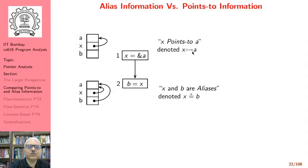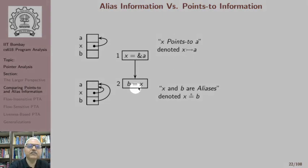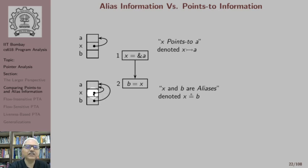After the execution of the next assignment, we store the contents of x into b. The contents of x happen to be the address of a, so b also contains the address of a. Now x and b both hold the same address, so we say x and b are aliases, denoted x ≅ b.